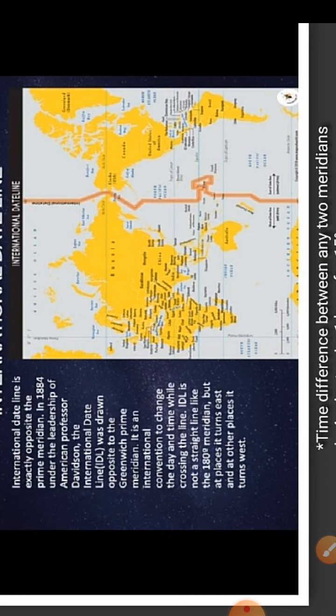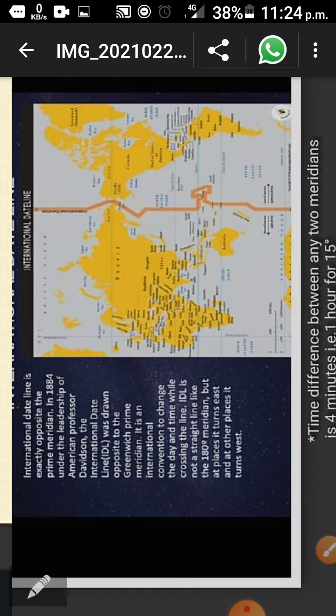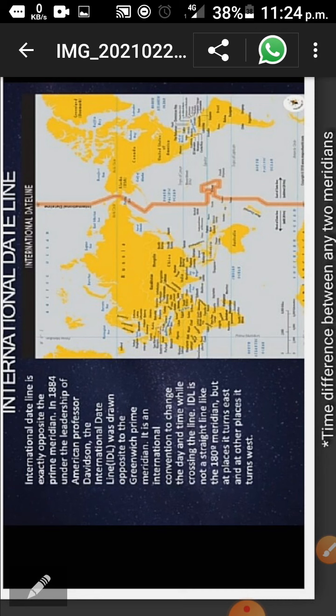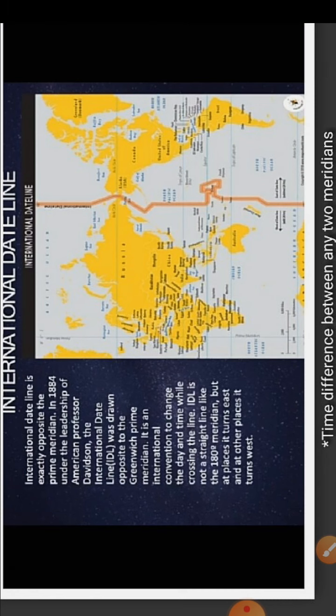The IDL is not a straight line. As you can see here, it is curved and turned at many places. This is because when the IDL would pass through a land or a country, people on either side of that land would have different dates.